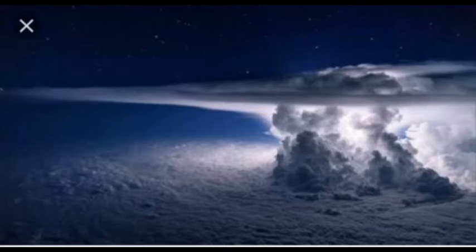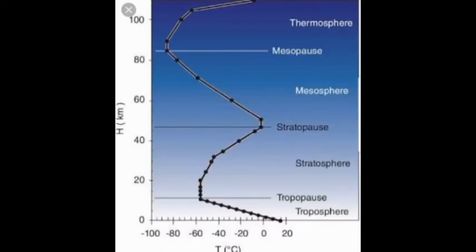The troposphere is the home of clouds, lightning, and other weather phenomena. Observe the diagram — you can see the tropopause, stratopause, mesopause, and thermopause. A 'pause' is the boundary between the layers of the atmosphere. The tropopause separates the troposphere and the stratosphere.